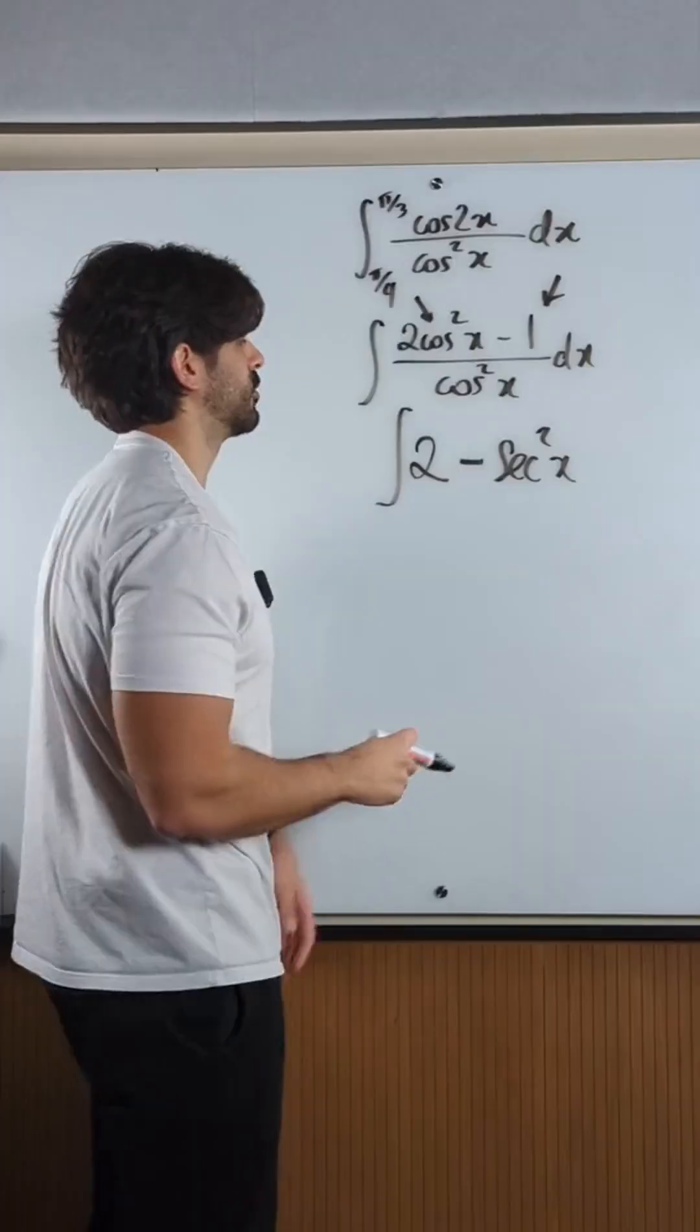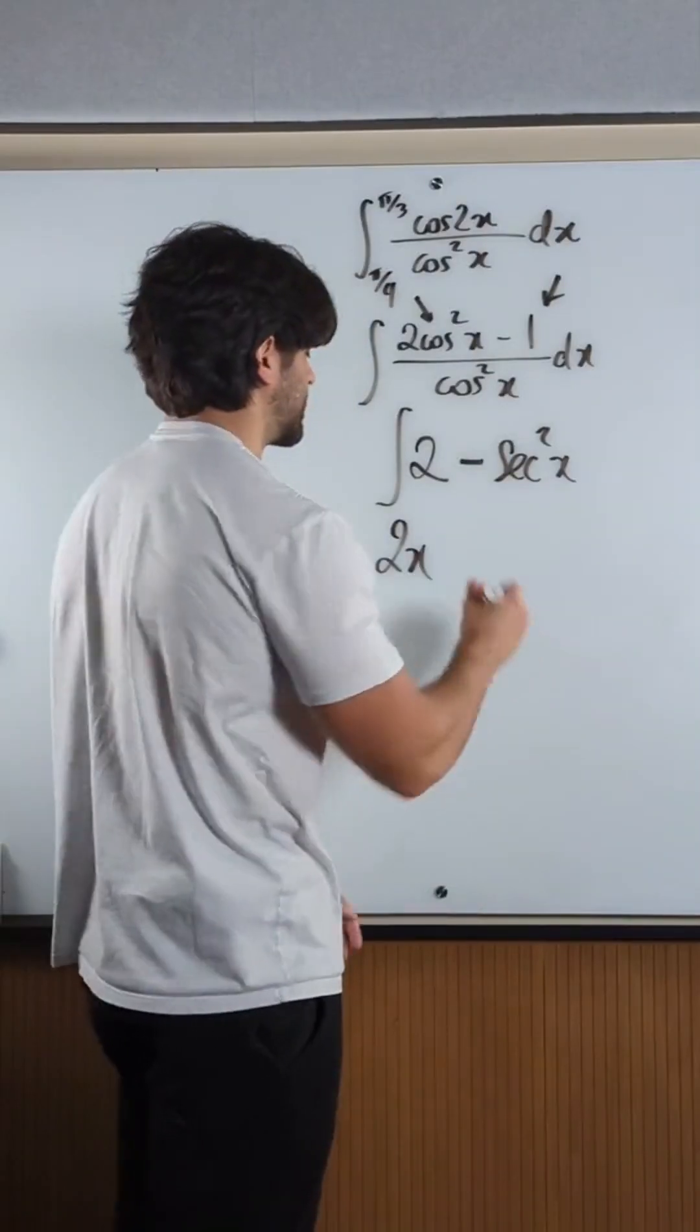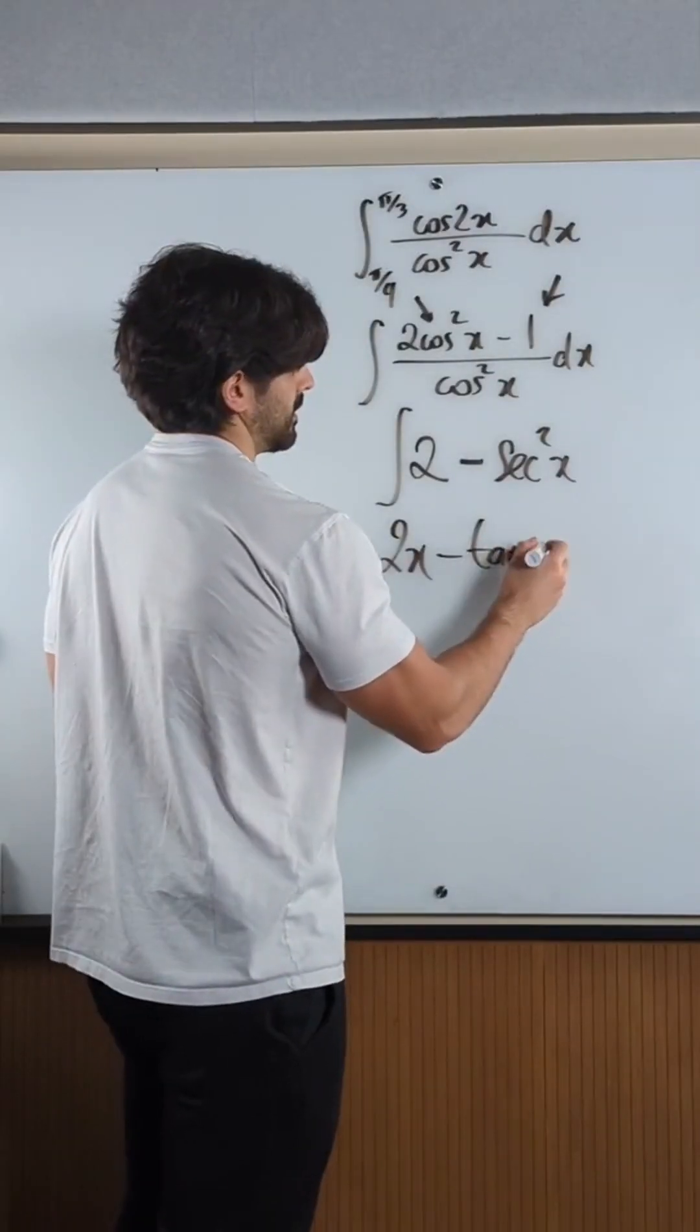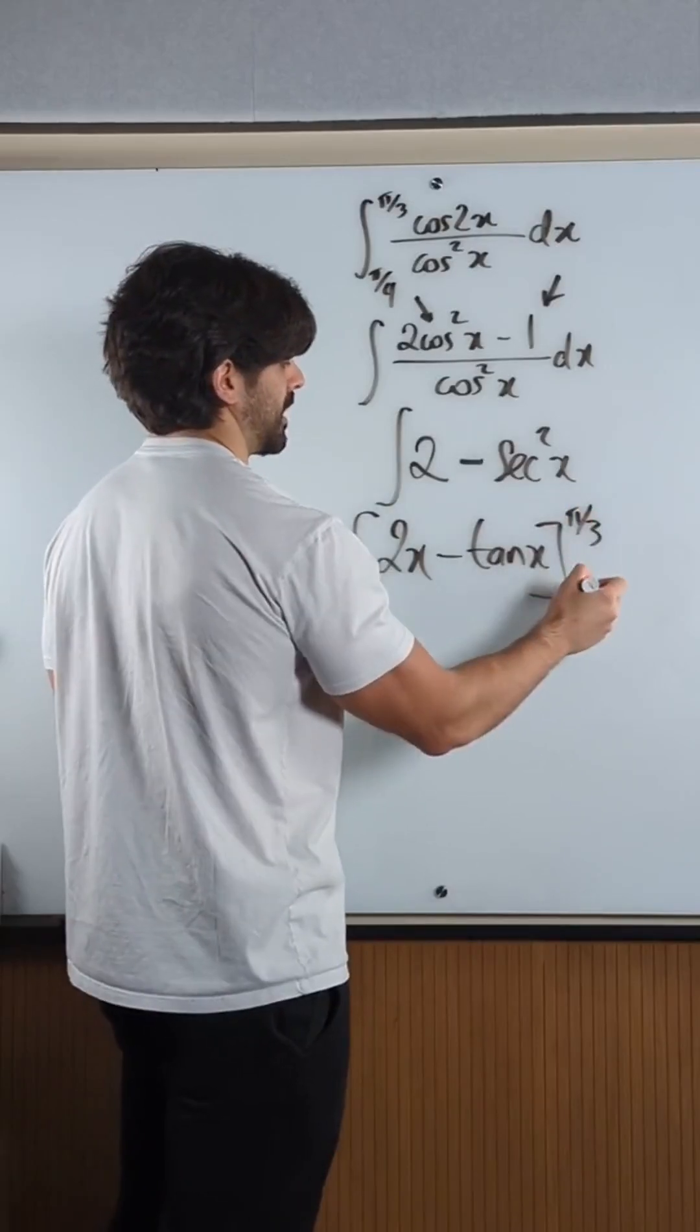No worries. Let's do this. Integrate 2. 2 integrates to 2x. You're thinking about what differentiates to sec squared is tan. Okay, now we're doing that between pi over 3 and pi over 4.